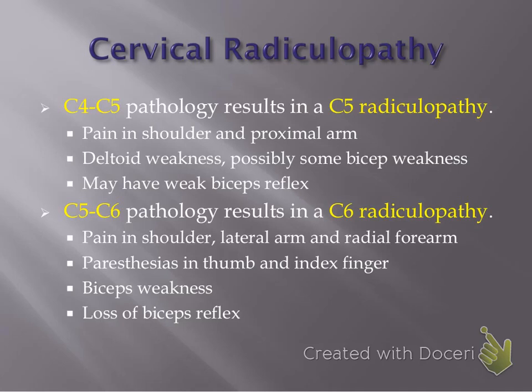With a C5-6 pathology, you'll get a C6 radiculopathy, which will result in pain and paresthesias into the arm — more specifically the shoulder, lateral arm, and radial side of the forearm — with paresthesias possible in the thumb and index finger. Thumb and index finger — think C6. You will get a weak bicep, some weak wrist extension, and possibly a loss of the bicep reflex.